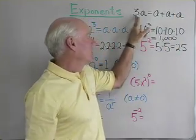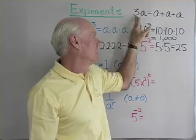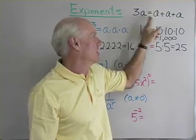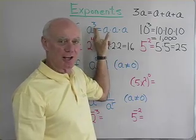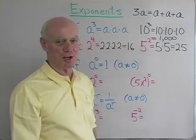So when your number here is a coefficient like this, it's a positive integer coefficient. It stands for repeated addition. When the number is an exponent like this with this notation, this stands for repeated multiplication.